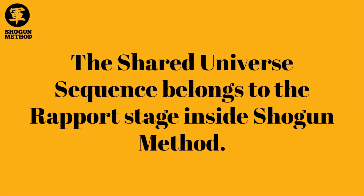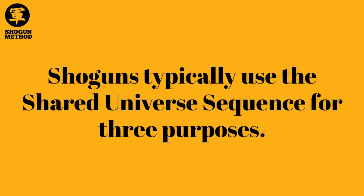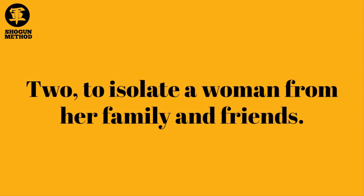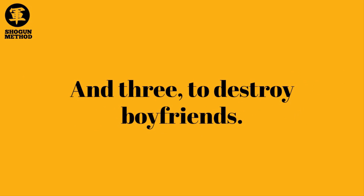The Shared Universe Sequence belongs to the Rapport Stage inside Shogun Method. Shoguns typically use it for three purposes: one, to build deep rapport and escalate to the third stage in the IRA model; two, to isolate a woman from her family and friends; and three, to destroy boyfriends.